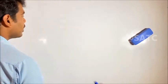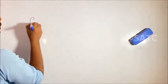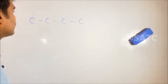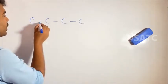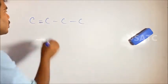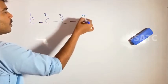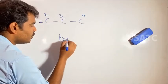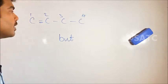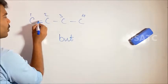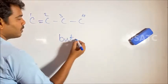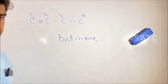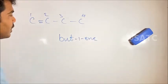Here is another similar example. This one has 4 carbons — 'buta-'. So we count: 1, 2, 3, 4. You can see 4 carbons in the same way, giving us buta-1-ene.